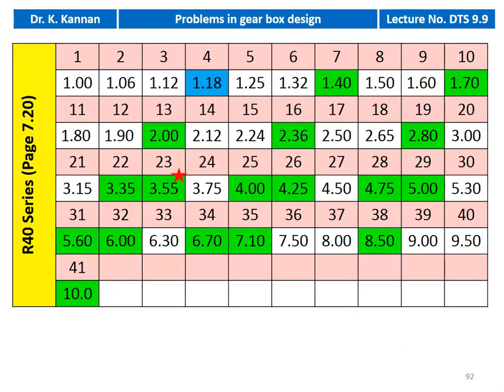The R40 series table is available on page number 7.20 of the PSG Design Data Book. The progression ratio values start at 1.0, 1.06, 1.12, and go up to 9.5, 10, 10.6, 11.2, 11.8, continuing up to 95, then 100, 106, 112, and so on. Our required value of 1.18 is highlighted in blue in this table.